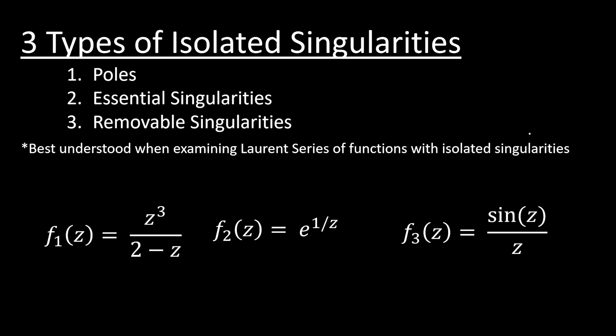Now, with these isolated singularities, we have three different kinds of them. We have poles, essential singularities, and removable singularities. But these are best introduced and best understood when examining the Laurent series of functions with isolated singularities. So, here are three functions that we are going to evaluate and examine what kind of isolated singularities they are.